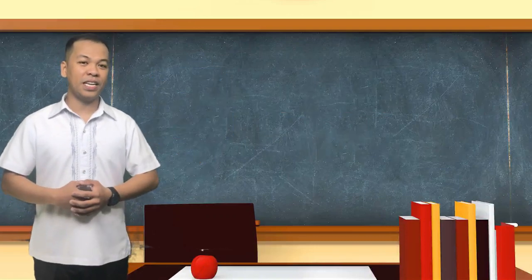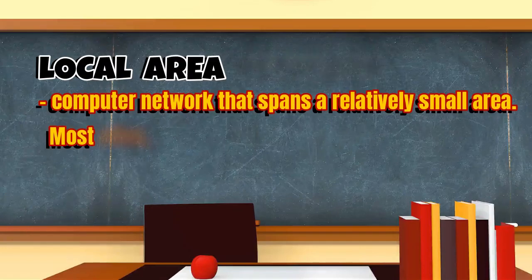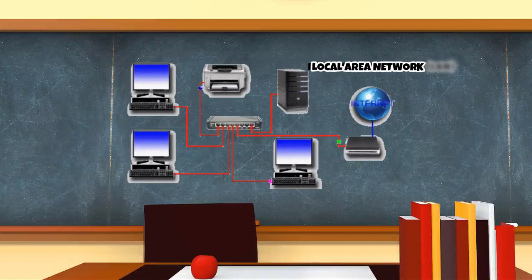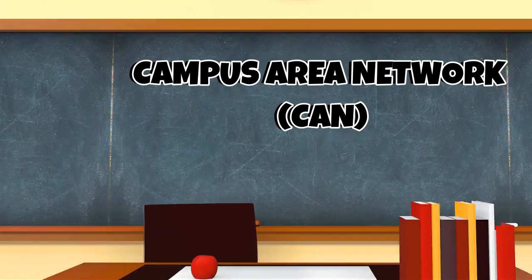For those who are working in an office, they are probably using local area network. Local area network is a computer network that spans a relatively small area. Most often, a LAN is confined to a single room or a building, which typically has a few separate computers linked to one or two printers, a scanner, and maybe a single shared connection to the internet. However, one LAN can be connected to other LANs over any distance via telephone lines and radio waves, and this is what we call the campus area network.